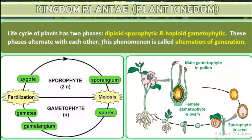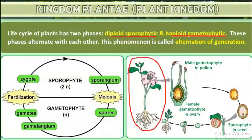The life cycle of plants has two distinct phases: the diploid sporophytic phase and the haploid gametophytic phase. In the gametophytic phase we can see the male gamete and the female gamete. These two phases alternate with each other.